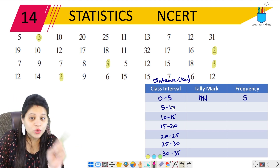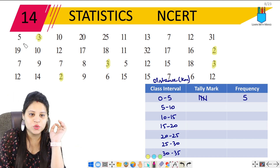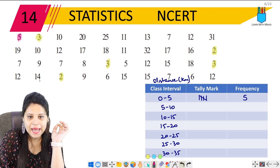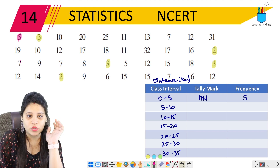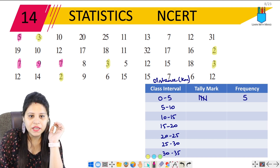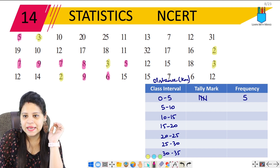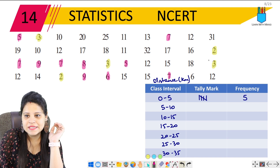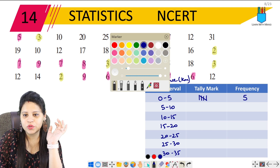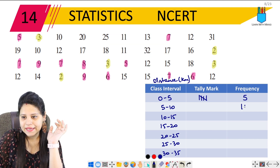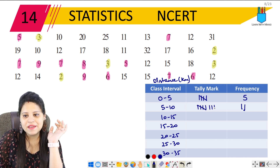Next is 5 to 10, where 5 is included but 10 is not included. Counting through: 1, 2, 3, 4, 5, 6, 7, 8, 9, 10, 11. So the frequency for 5 to 10 is 11.